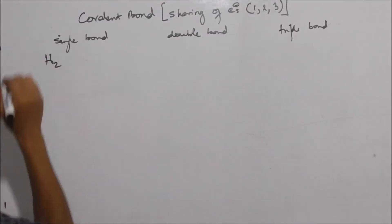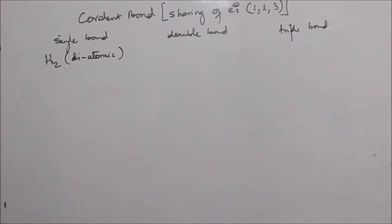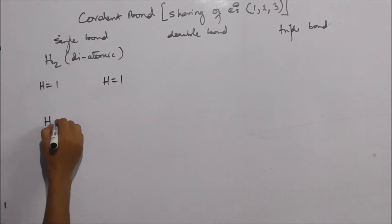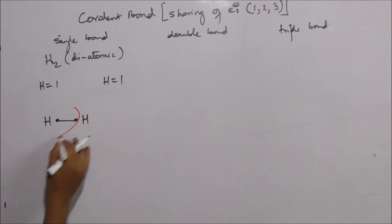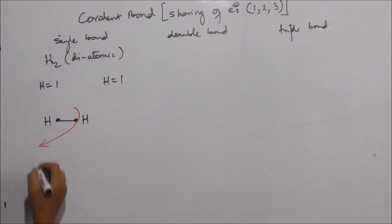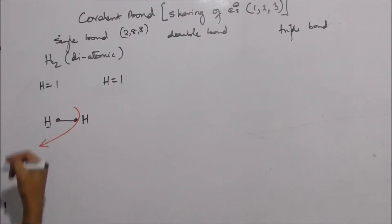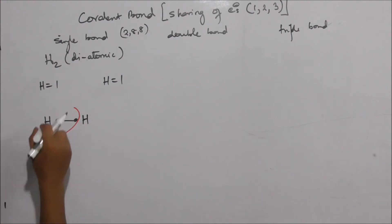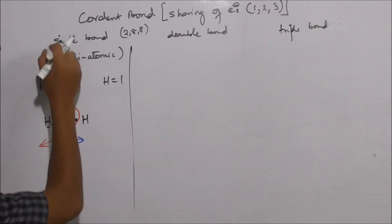A single bond is seen in the formation of hydrogen gas. Hydrogen gas is diatomic. Hydrogen has atomic number 1, so it has 1 electron. When two hydrogen atoms share their electrons, hydrogen achieves 2 electrons and becomes stable, hence the formation of the H₂ molecule by a single bond.